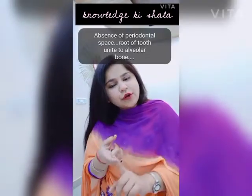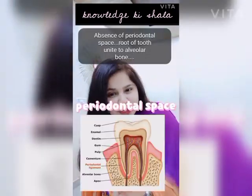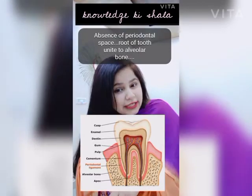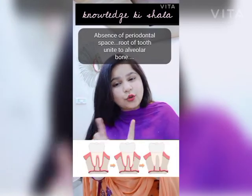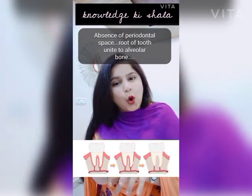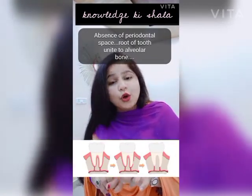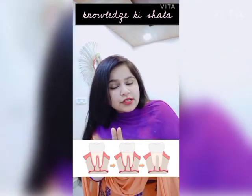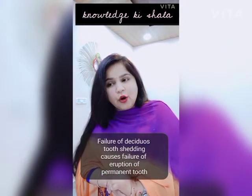Due to the absence of the periodontal space — and I hope you know what the periodontal space is — there is a union of the alveolar bone and the root of the tooth. Because of that, the resorption process is affected and the deciduous tooth fails to move out of the oral cavity.